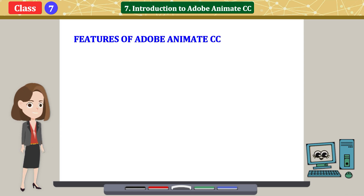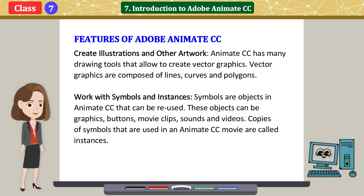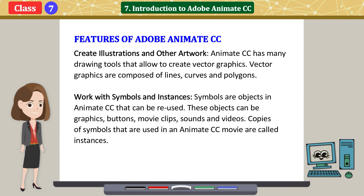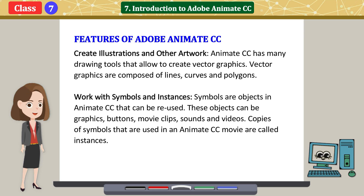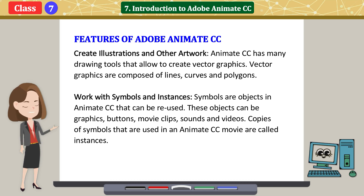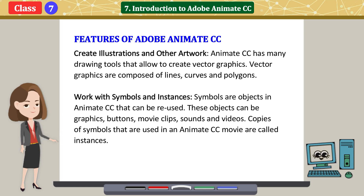Features of Adobe Animate CC. First, create illustrations and other artwork. Animate CC has many drawing tools that allow you to create vector graphics. Vector graphics are composed of lines, curves, and polygons. Second, work with symbols and instances. Symbols are objects in Animate CC that can be reused. These objects can be graphics, buttons, movie clips, sounds, and videos. Copies of symbols that are used in an Animate CC movie are called instances.